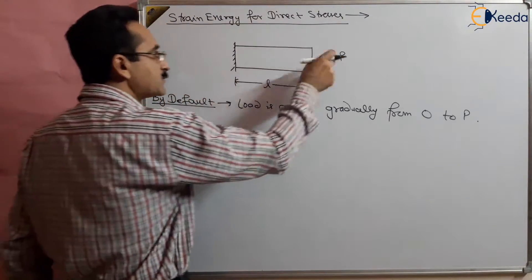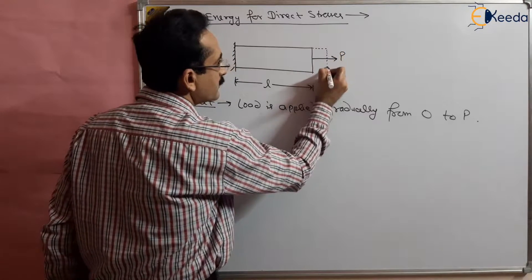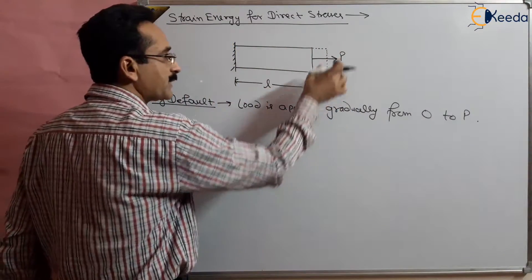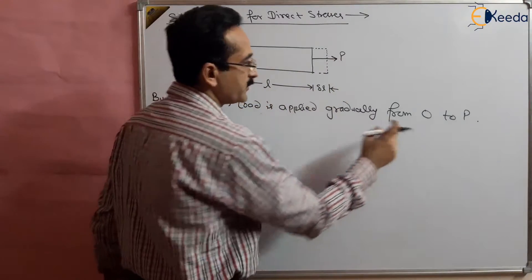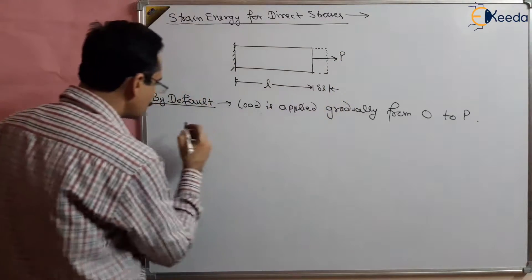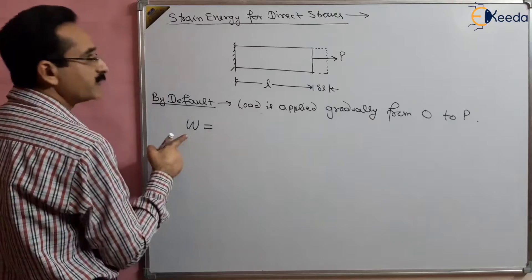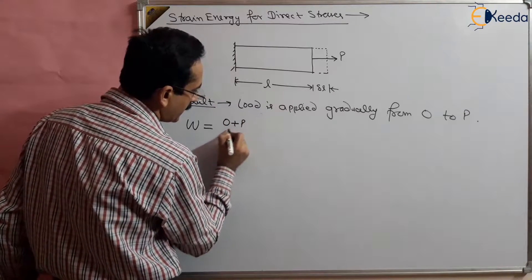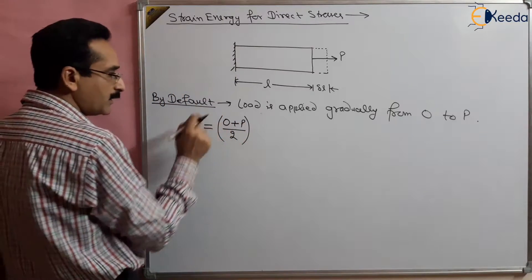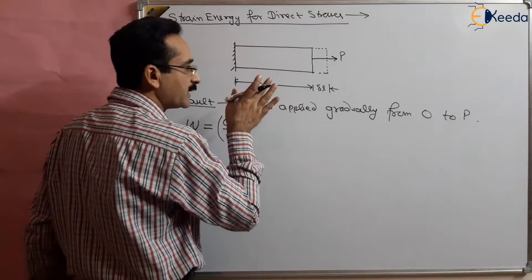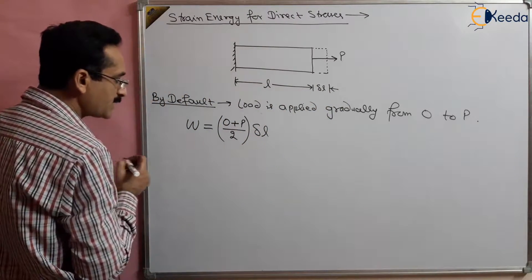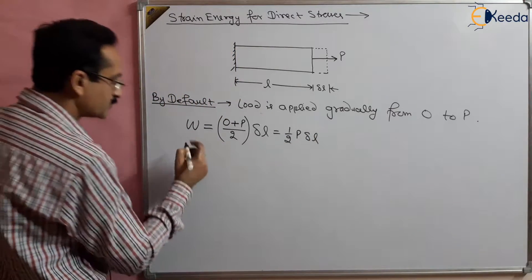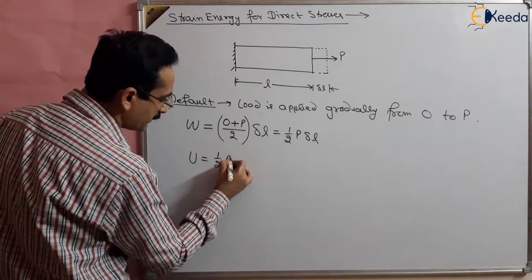The work done by this load, with some deflection delta L, will be equal to P times delta L. But since the load is applied gradually from zero to P, we take the average. So work done equals the average load — from zero to P — multiplied by delta L. This work done is stored as strain energy, giving us U = half P delta L.